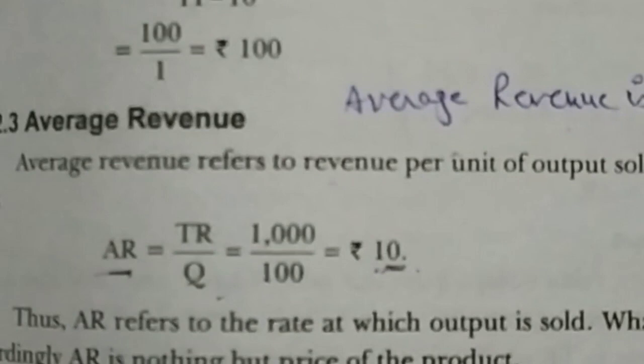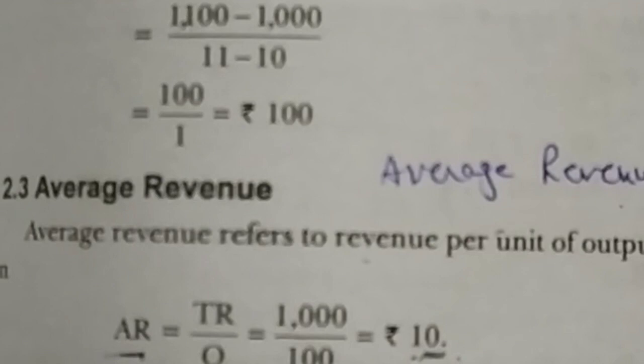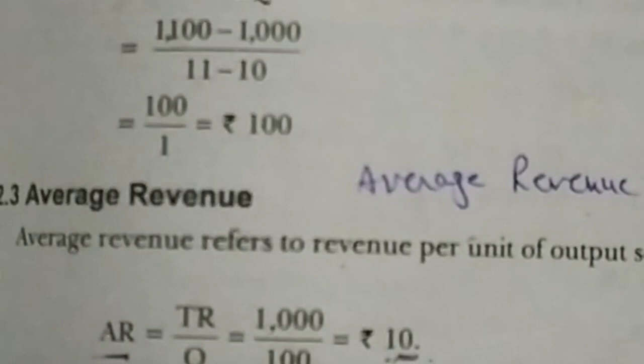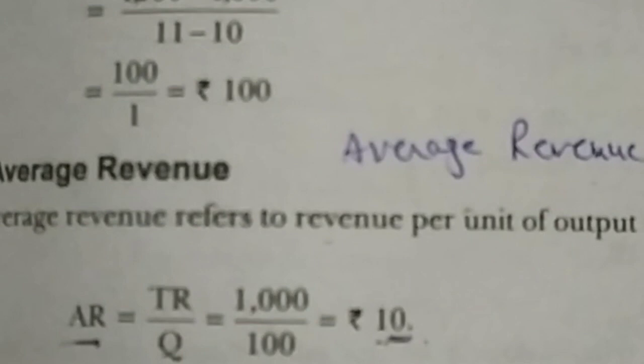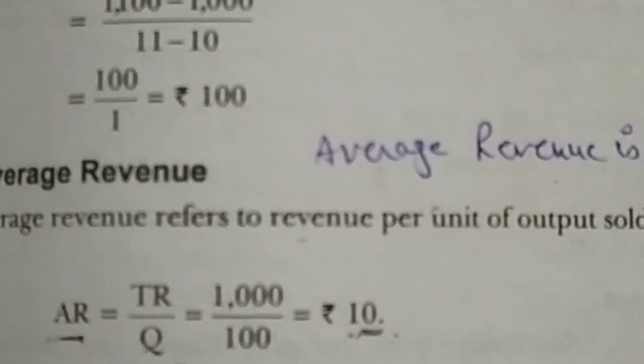Average revenue tells us the actual price per unit of a commodity. So average revenue gives us three things: first, it is per unit revenue; secondly, average revenue shows us the demand of any firm — when we discuss perfect competition or monopoly, the demand curve is generated based on the average revenue curve; thirdly, average revenue is the price of the commodity. Now we come to the third concept: marginal revenue.